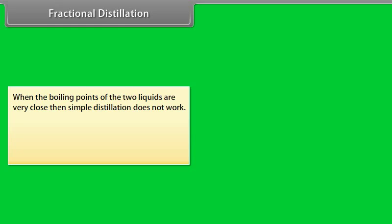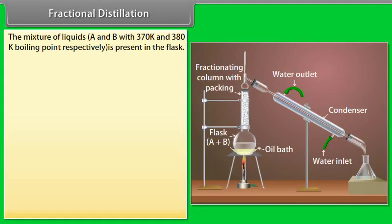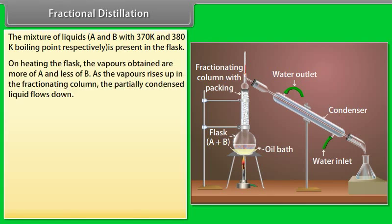Fractional distillation: when the boiling points of two liquids are very close, simple distillation does not work. In that case, a fractionating column is used, which is a long tube that provides obstructions to the passage of vapours upwards and liquid downwards. For a mixture of liquids A and B with boiling points 370 K and 380 K respectively, on heating the flask, the vapours obtained are more of A and less of B.